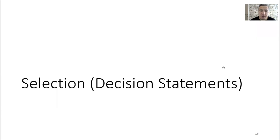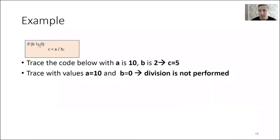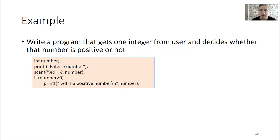Today I will wrap up the selection decision statements. First, a quick recap: we introduced the if statement, where if the condition is true, we execute the first statement after the condition. We talked about relational operators and logical operators. We get input from the user, compare it with zero, and if the number is greater than zero, we put a message on the screen. This is the basic usage of the selection statement.